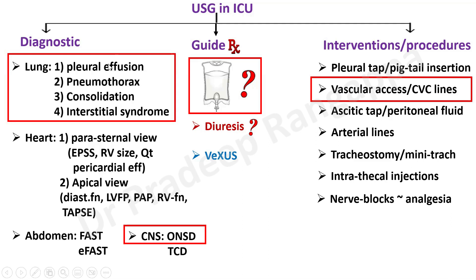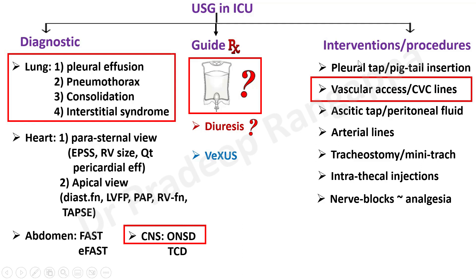The ones marked in red are what I'll try to cover. Diagnostically, in the lung we can look at pleural effusion, pneumothorax, consolidation, and interstitial syndrome — which is essentially pulmonary edema. We have something called the Blue Protocol. In the heart, echocardiogram is a separate science — we assess LV function, RV function, and cardiac output. In the ICU, we tend to use echocardiogram more to assess fluid responsiveness and adequacy of resuscitation.